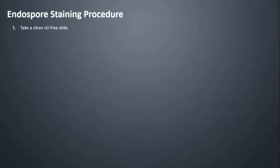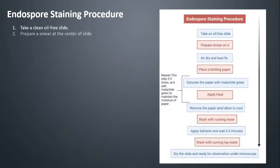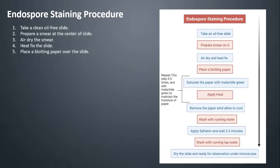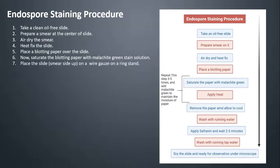Endospore staining procedure: Step 1, take a clean oil-free slide. Step 2, prepare a smear at the center of the slide. Step 3, air dry the smear. Step 4, heat fix the slide. Step 5, place a blotting paper over the slide. Step 6, saturate the blotting paper with malachite green stain solution. Step 7, place the slide, smear side up, on a wire gauze on a ring stand. Step 8, heat the slide until it starts to evaporate. The heating can be done by Bunsen burner or boiling water bath.